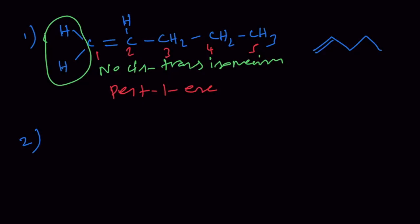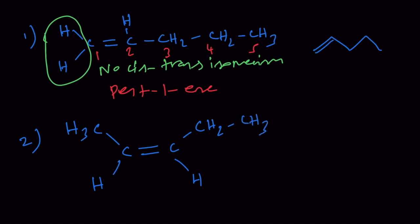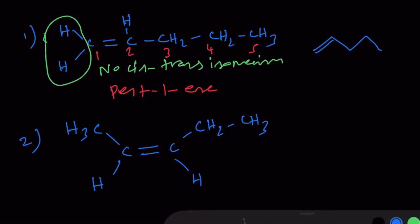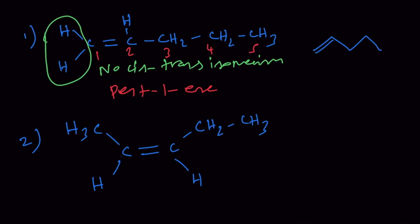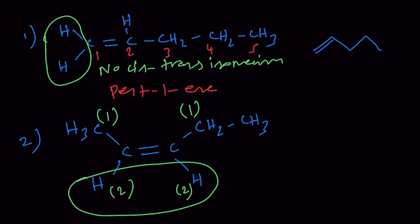Isomer 2: we are going to draw the Z form of pent-2-ene, that is H3C-C=C(H) with CH2CH3, hydrogen and the methyl group on the same sides. As per Cahn-Ingold-Prelog rules, carbon has a higher atomic number than hydrogen, so carbon gets top priority and hydrogen gets least priority on each side. Our low priorities are on the same side, which means this is the Z isomer.